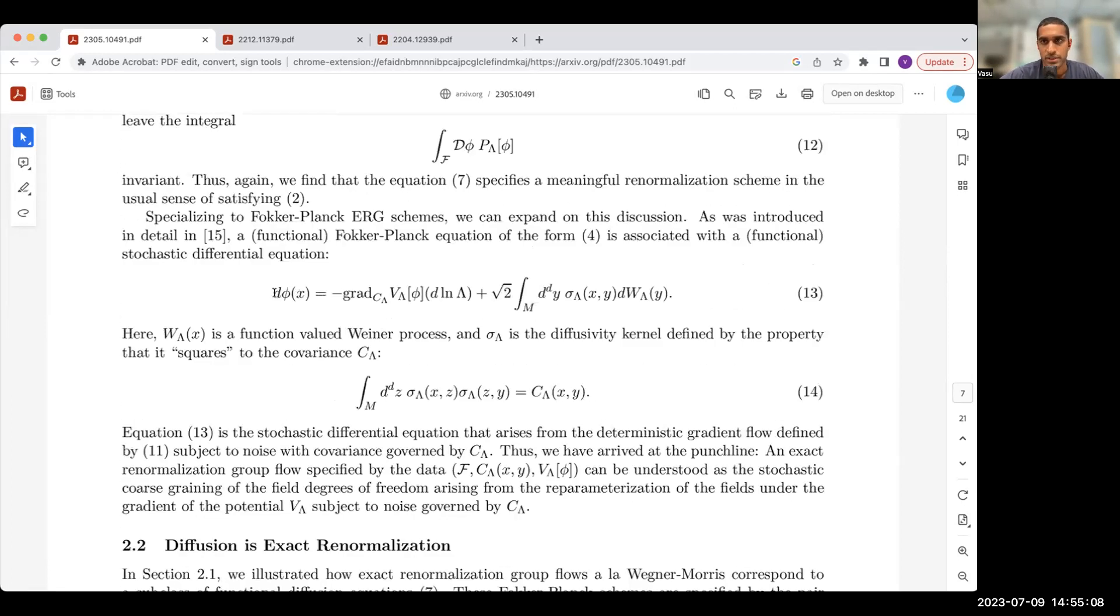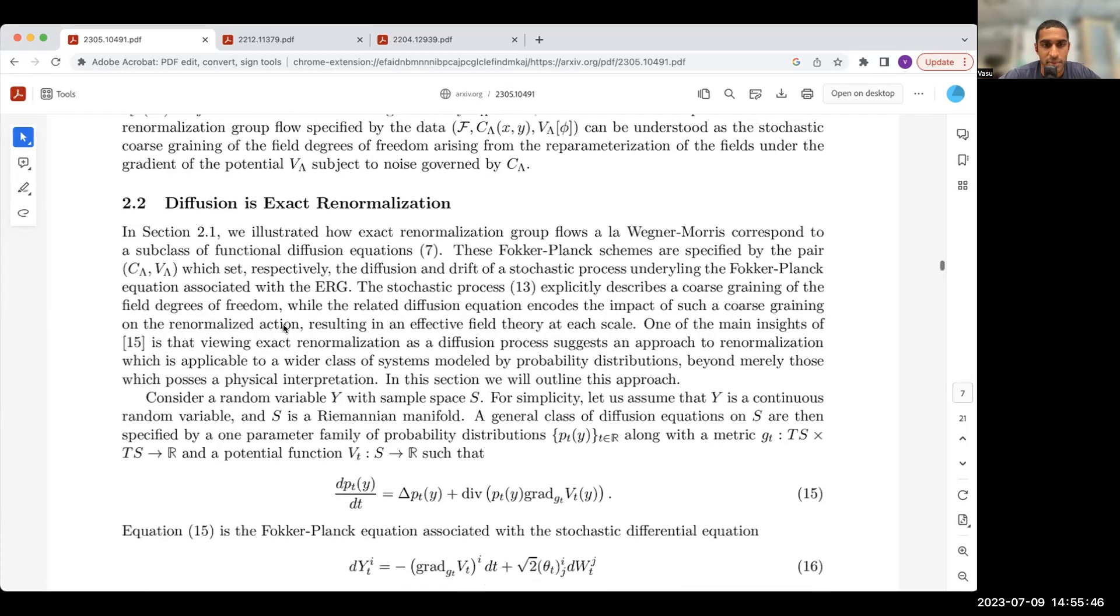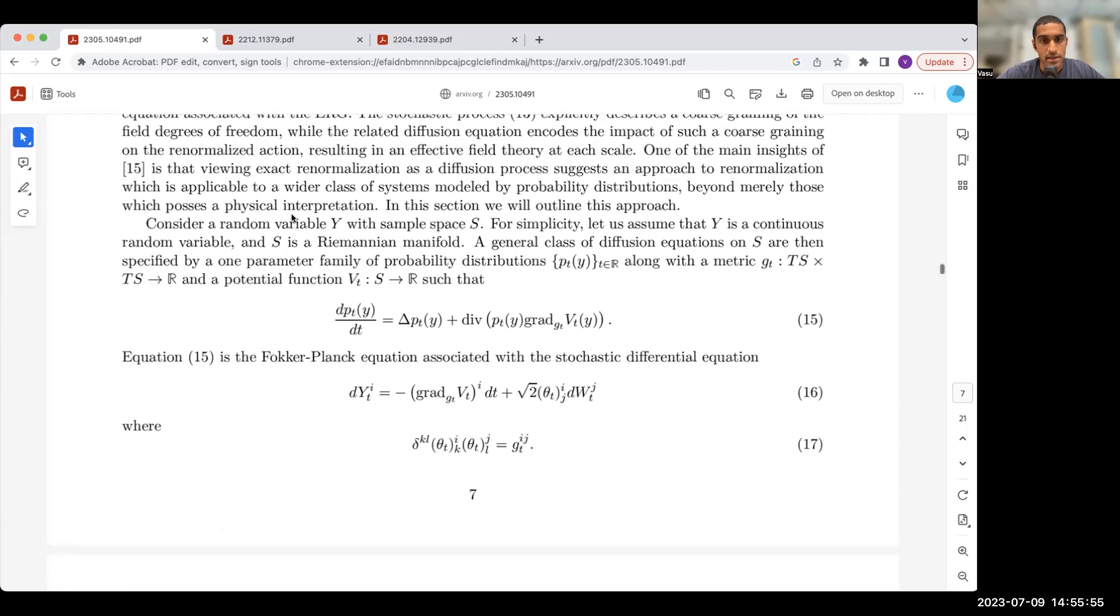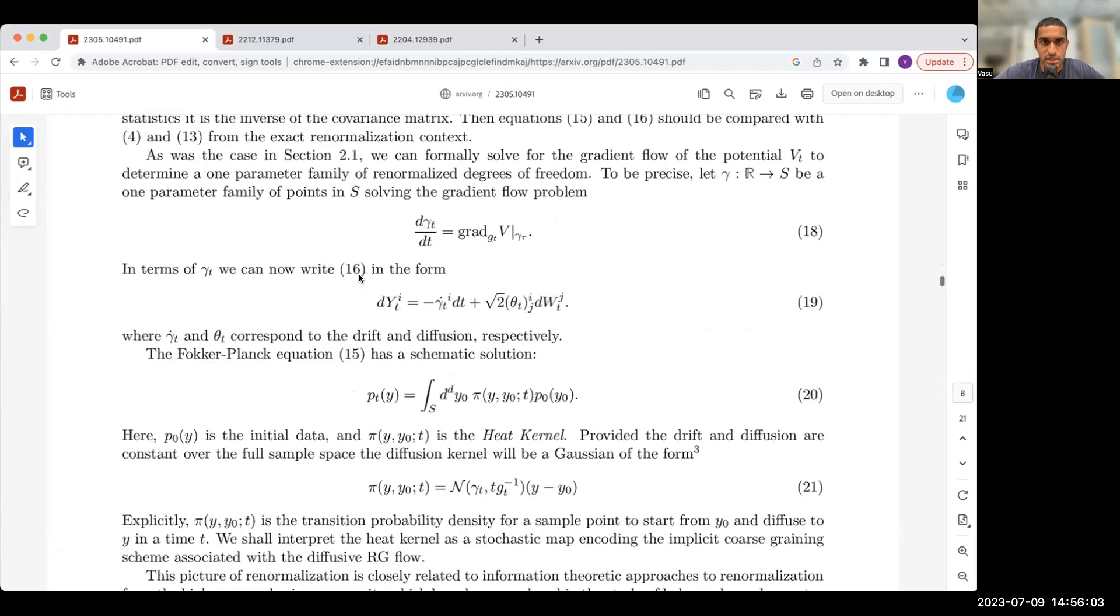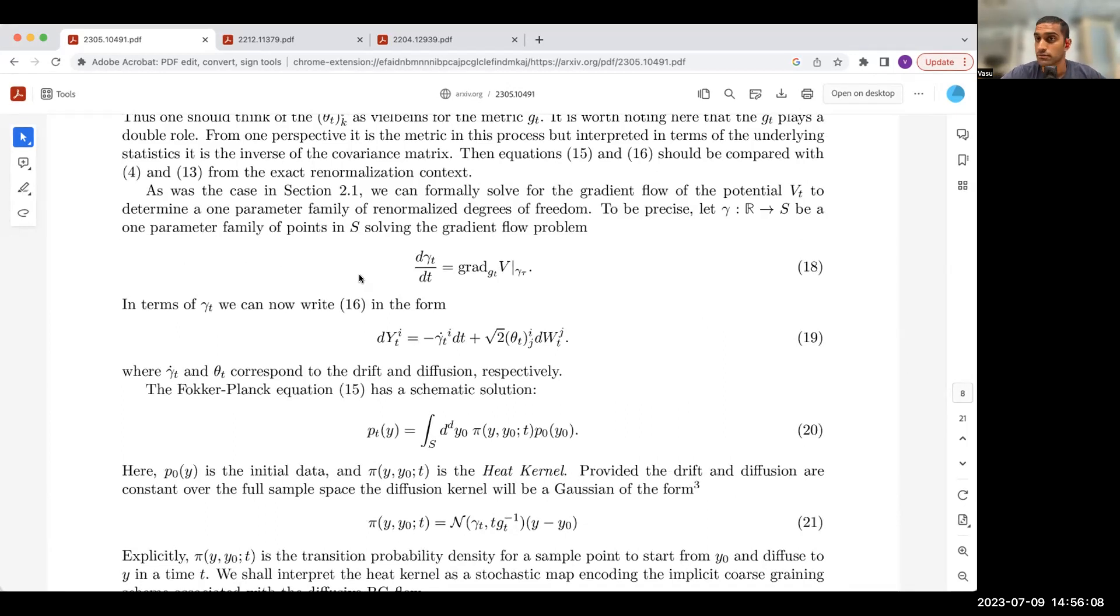Now let's recall that when you have a Fokker-Planck equation, and this is such a simple thing that I appreciate they made a note of, and I'm surprised this observation hasn't been made before, maybe I was ignorant of it, a Fokker-Planck equation has a stochastic differential equation behind it. The stochastic differential equation here is of this form, where we have log lambda, where lambda is a cutoff playing the role of time. We have a metric c_lambda which we're using to raise the index of the functional gradient operator acting on V. We have the following Wiener process where sigma acts as the vielbein for this metric. Basically, it squares to the covariance.